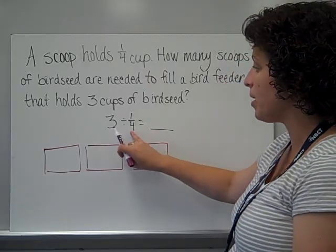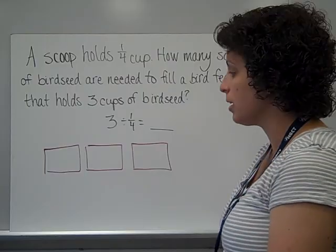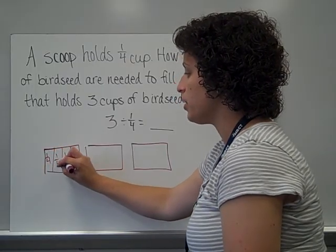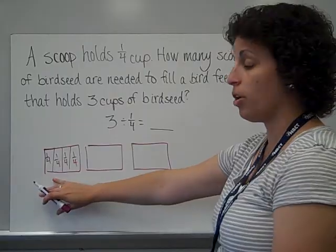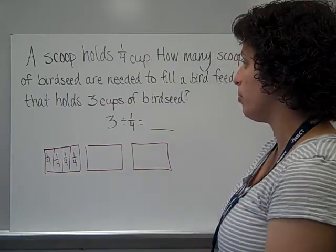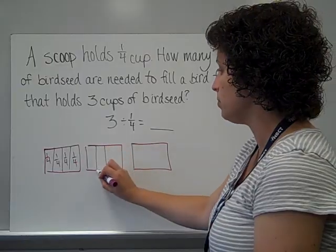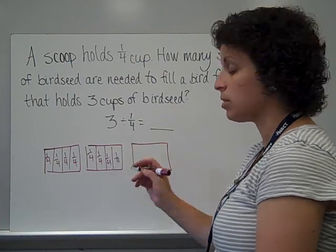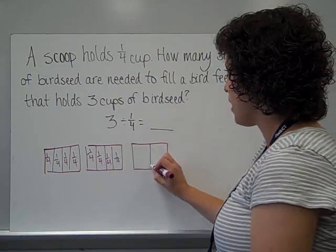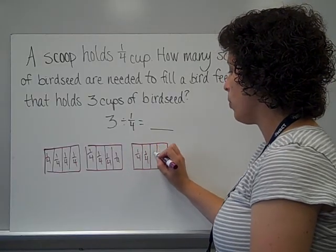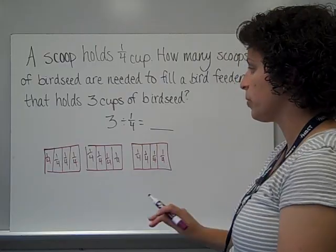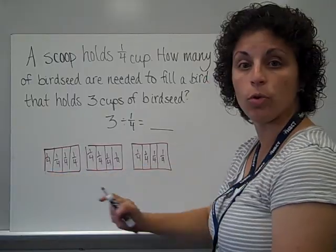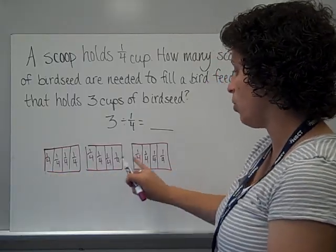Second step, I need to know how many 1 fourths are in these 3 rectangles. I'm going to cut each one into fourths. So there would be 1 fourth here, another here, another, and another — so there are 4 fourths in that 1 cup. Then I'm going to cut the second rectangle into fourths as well, getting 4 more fourths. And each scoop is a fourth. And finally, I cut the third rectangle: 1 fourth, 1 fourth, 1 fourth, 1 fourth.